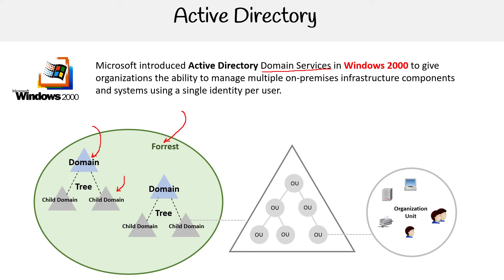When we look inside of a domain — whether it's a child or parent domain — we have organizational units. These are just ways of structuring departments or similar groupings. Within organizational units, we have objects. Objects could be groups, users, printers, servers, and devices. Essentially, they're just things within your network.